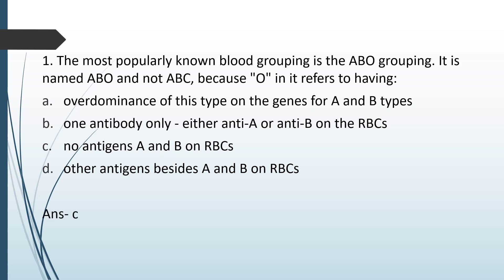O refers to having no antigen A or B on RBCs. ABO blood grouping is based on presence of antigens on the surface of RBC — it can be antigen A, antigen B, presence of both antigen A and B, or presence of neither antigen A nor B. When there is no antigen A or B on the RBC, it is called O blood group. So the correct answer is option C.